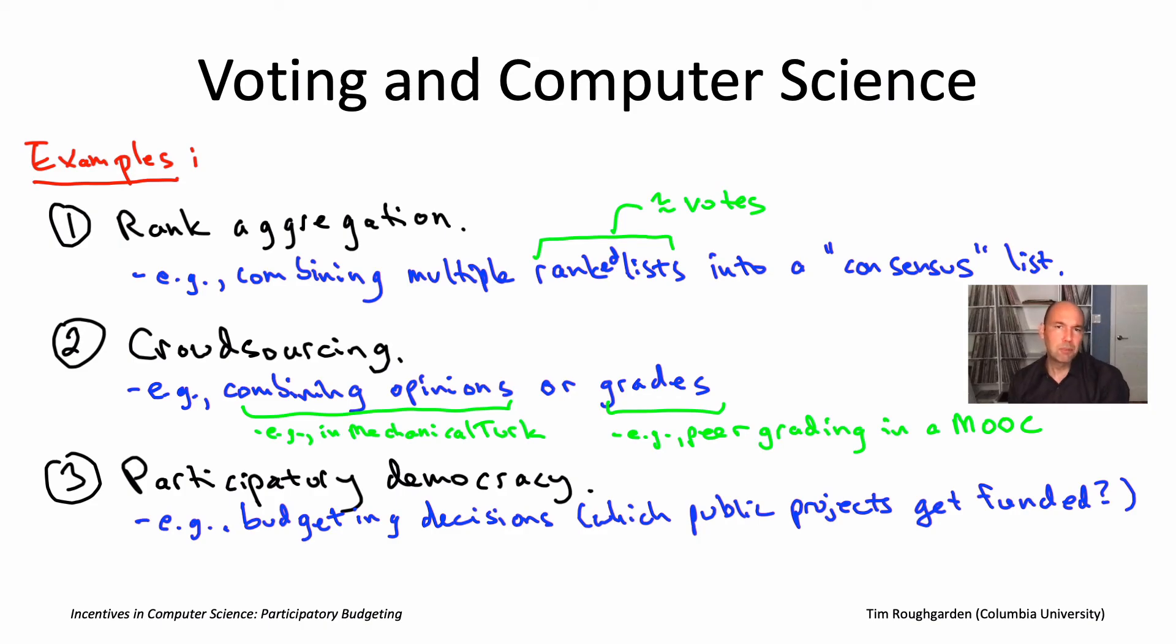Now, technology helps enable participatory democracy in at least a couple different ways. Kind of the most obvious one is it potentially makes voting a lot easier. So for example, it allows you to just vote on your smartphone rather than have to physically go to some polling place and maybe wait in a long line.